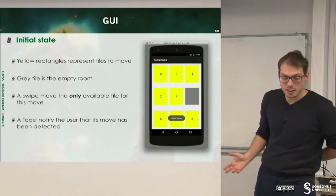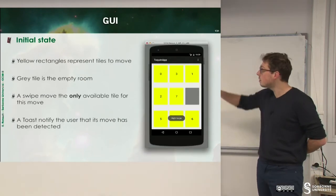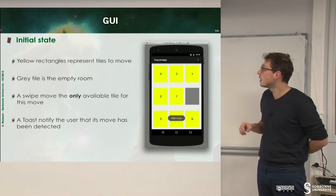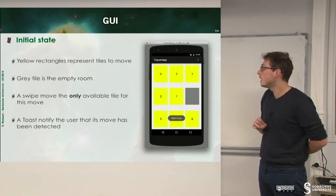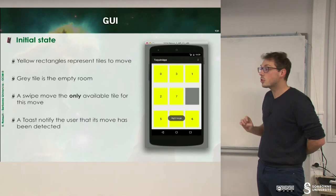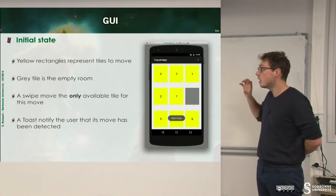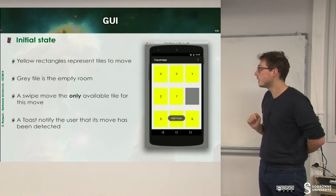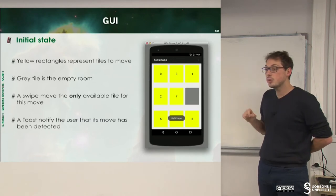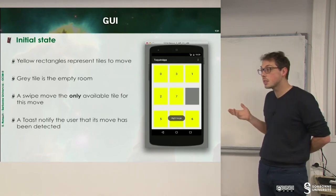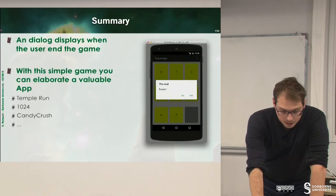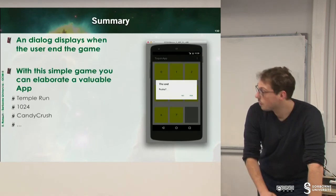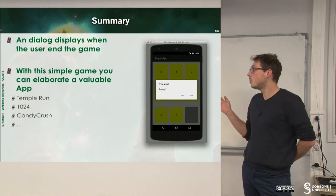The initial state has tiles where the gray one represents the empty room. A swipe will only move the only available tile for that move. You can notify the user when something happens, and when the game ends, the user can replay.